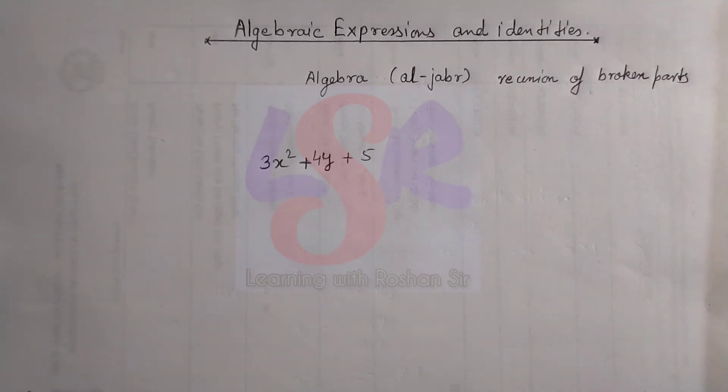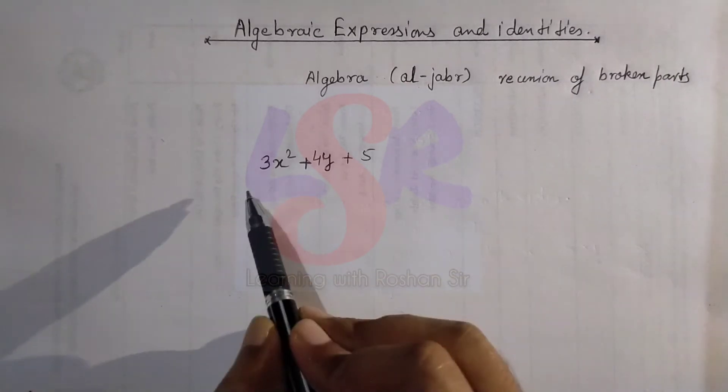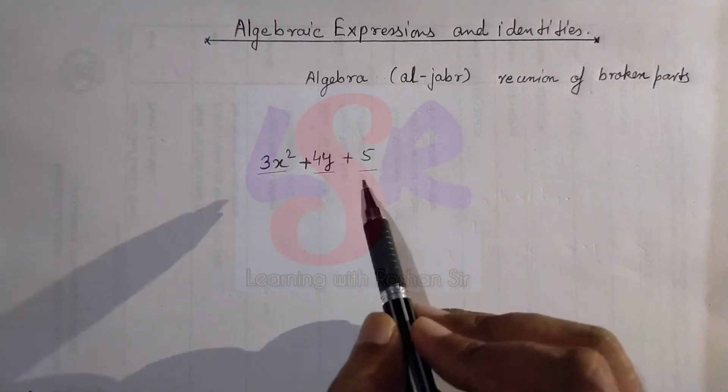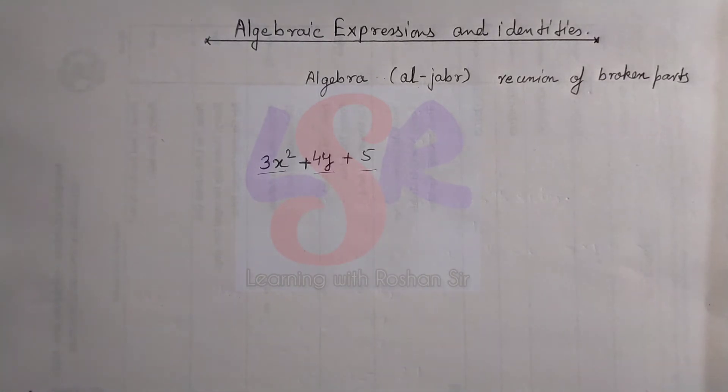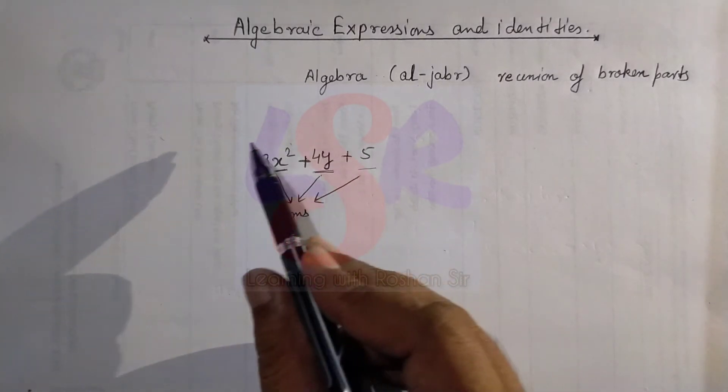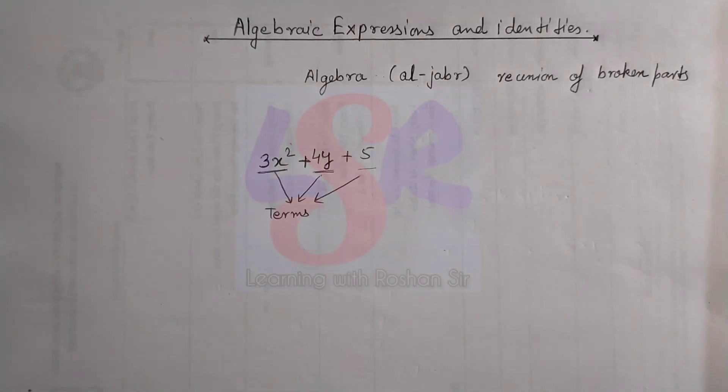Now suppose we are having this expression. In this expression, 3x, 4y and 5 will be three different terms, and this whole will be taken as an algebraic expression.